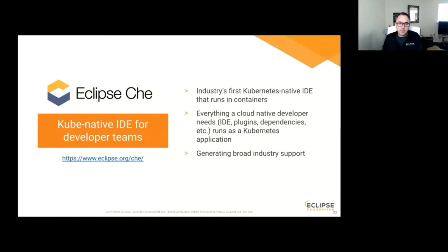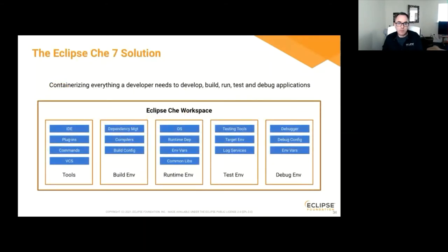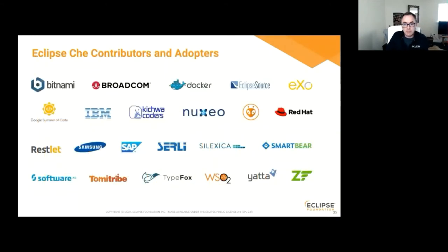Eclipse Che is what I like to think of as the kitchen sink — a Kubernetes-native IDE for developer teams running everything in containers. An Eclipse Che workspace supports tools for editing code, source control, build environment, runtime environment, test environment, and debug environment, all in one place. A very interesting adopter is Red Hat Code-Ready Workspaces, which is part of their OpenShift offering. Red Hat has invested a lot in Eclipse Che.